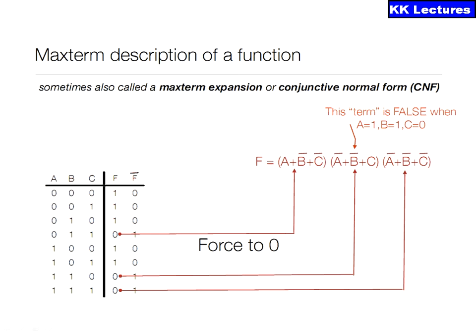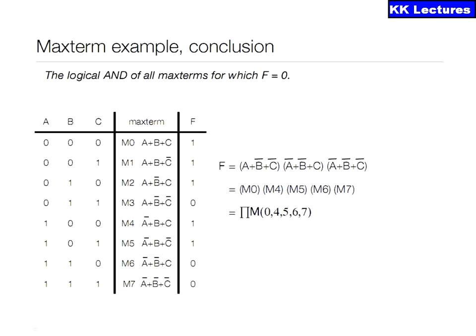Max term description as a function: considering the truth table where the function outputs are 1, 1, 1, 0, 1, 1, 0, 0 — whenever you want to express a function in POS form, consider only the zeros at the output. For a zero output, take the concerned combination — for example, 011 gives the term (A + B̄ + C̄), the next gives (Ā + B̄ + C), and the third gives (Ā + B̄ + C̄). The product of these terms forces the output to 0. The function is expressed as ΠM of the concerned max term indices.